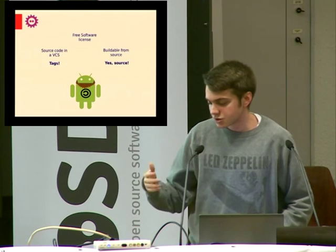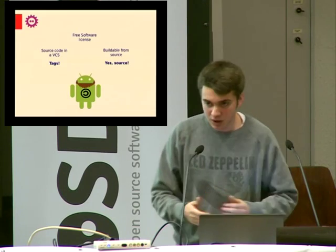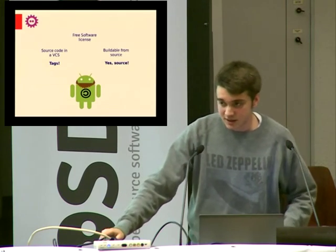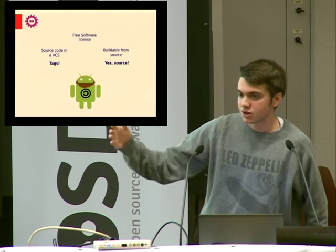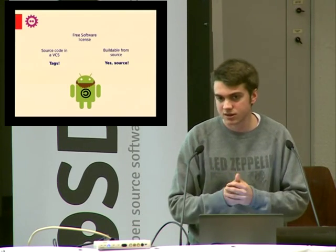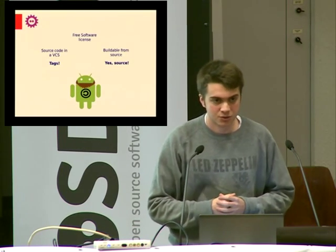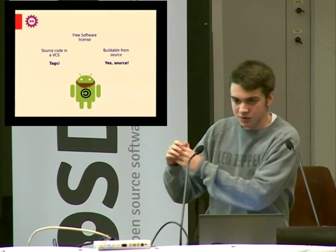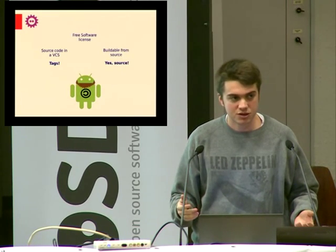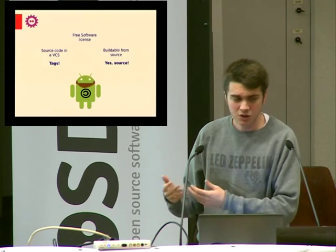This is just reminding people what source code actually means. You find lots of applications that say 'we are free software, our source code is on GitHub,' and then you go to the repository and find three jar packages — compiled Java classes — and two native libraries already compiled. So you can build the tiny Java UI part, but the rest of the application is completely closed. It might be open source, but you cannot build it from source. That actually happens a lot more than you would think.